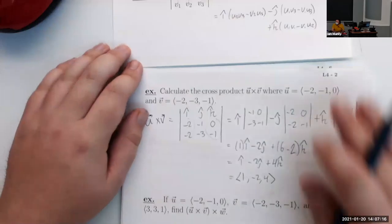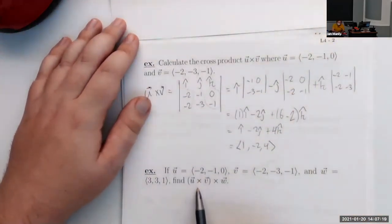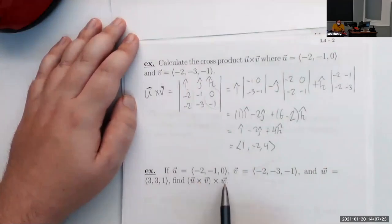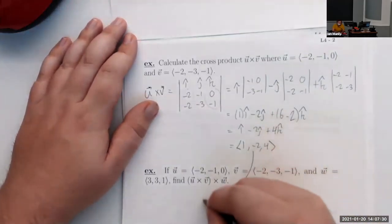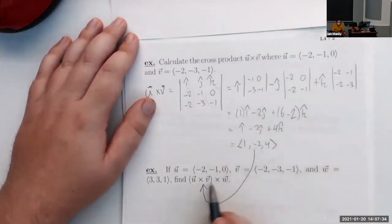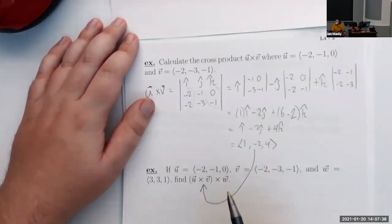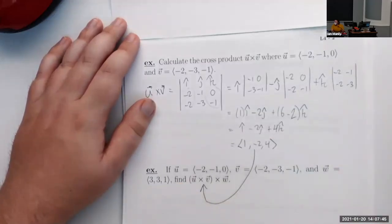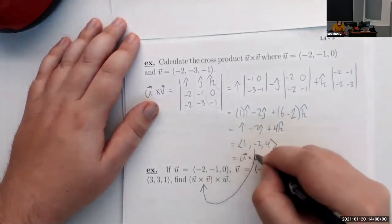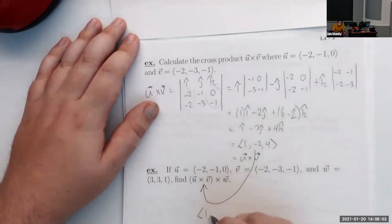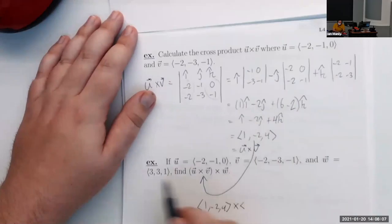Now the next example wants us to compute u × v and then cross the result with w. The good news is u and v are the same as before, so u × v = ⟨1, −2, 4⟩. All we have to do is cross that with the new vector w = ⟨3, 3, 1⟩.